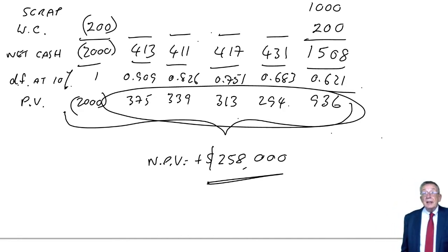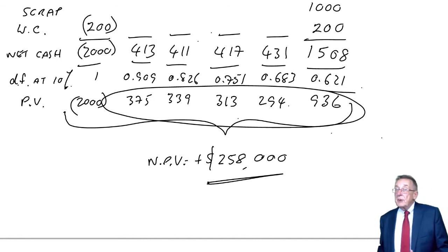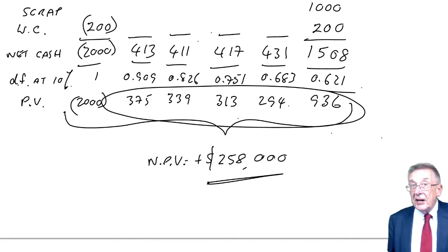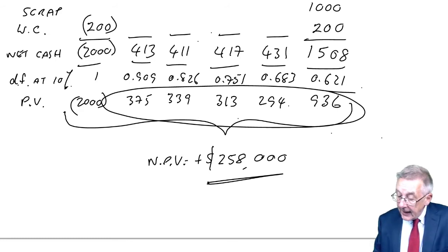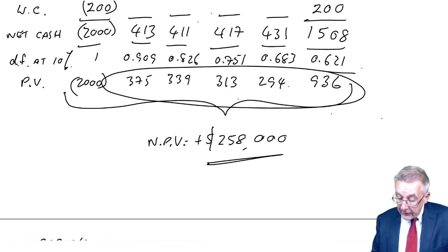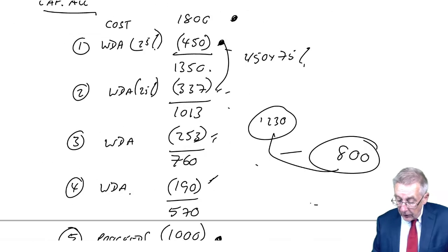We've already discounted the net present value at 10%, and it was positive. The internal rate of return is the rate of interest which gives the net present value of zero. Given that it's positive at 10%, to get zero the rate of interest must be higher. Let's discount at a higher rate, make a second guess, and then we can approximate to the IRR.